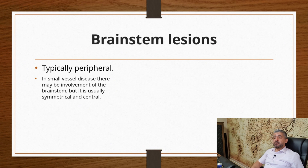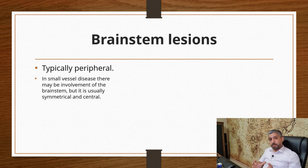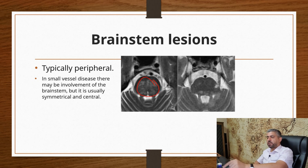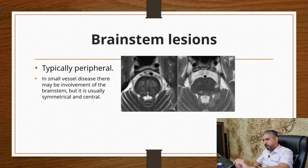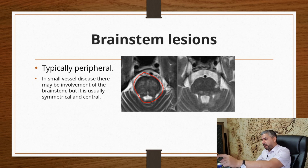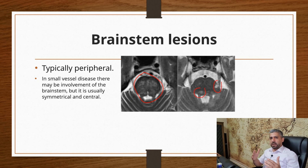Brainstem lesions typically occur peripherally, because the nerve fibers in the brainstem are peripheral and MS is a disease of nerve fibers. Brainstem lesions in MS are usually asymmetrical and not bilateral-symmetrical. For example, an area of T2 signal hyperintensity that is more symmetrical and homogenous is likely just small vessel disease — normal aging. Whereas an asymmetrical and irregular area of T2 hyperintensity is more consistent with MS lesions.